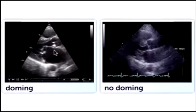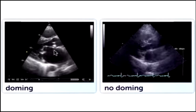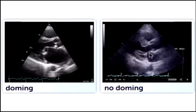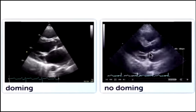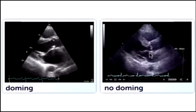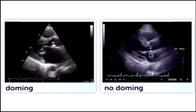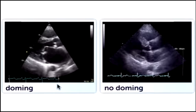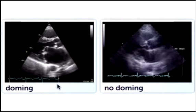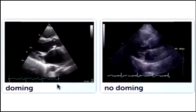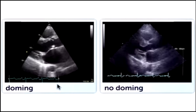A bulging motion of the anterior leaflet while the leaflet opens completely normal here in this normal patient. Remember, you can best see the doming motion in a parasternal long axis view.